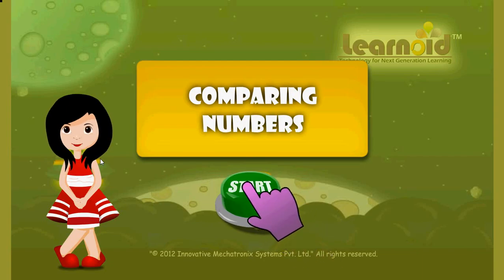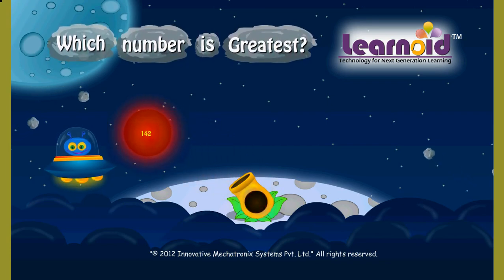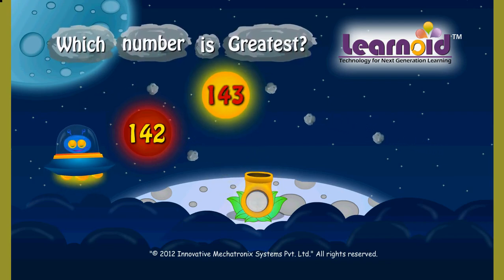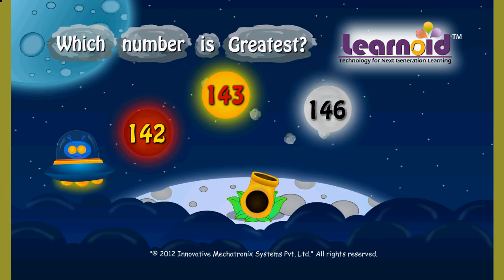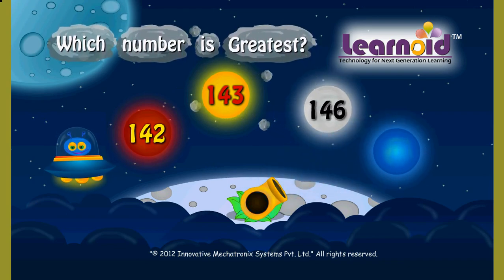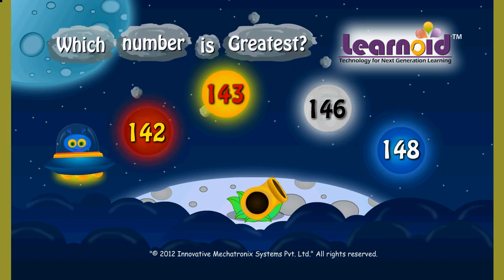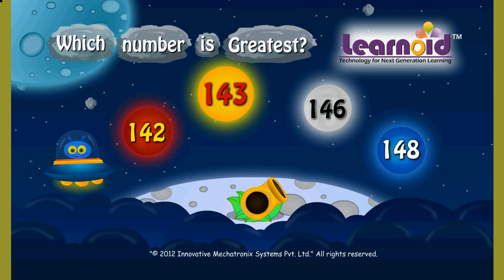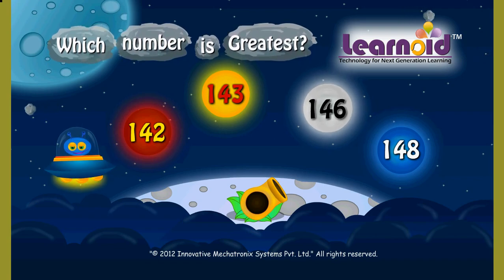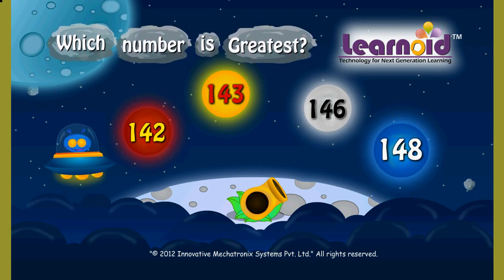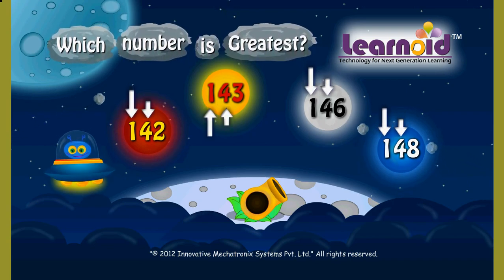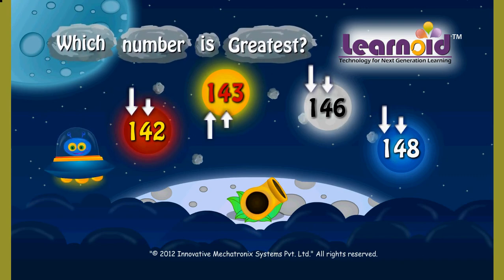Comparing Numbers. Which number is greatest? 142, 143, 146 or 148? The first and the second digits in all the four numbers are the same.